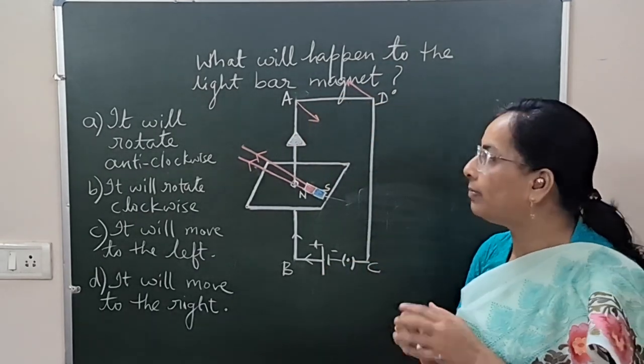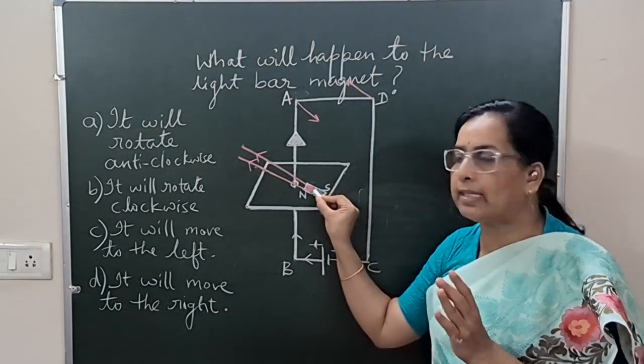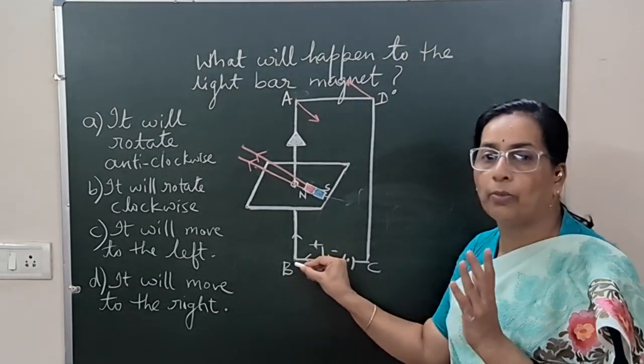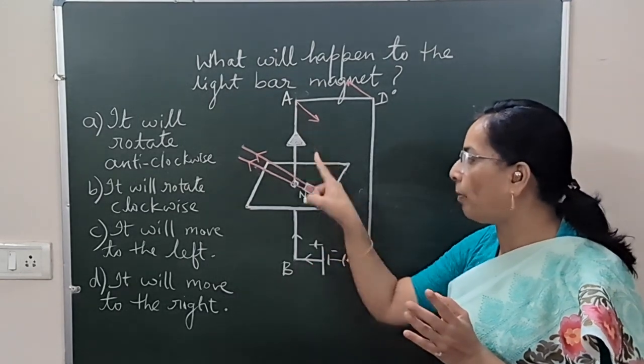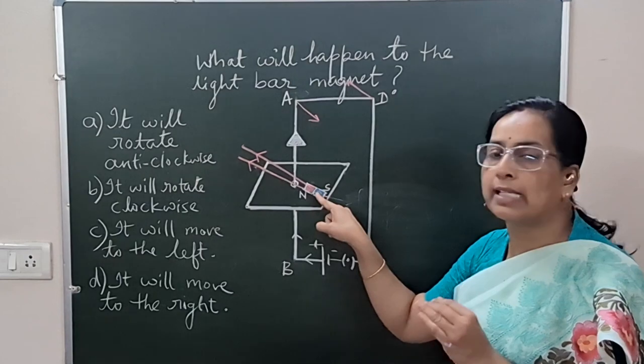So, which is the right answer? The right answer is when a freely suspended magnet is placed near a current carrying conductor with direction of current from bottom to top and north pole pointing towards the conductor, then this freely suspended magnet: